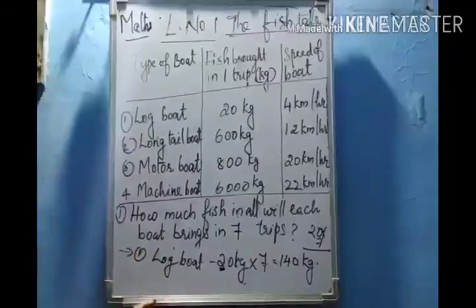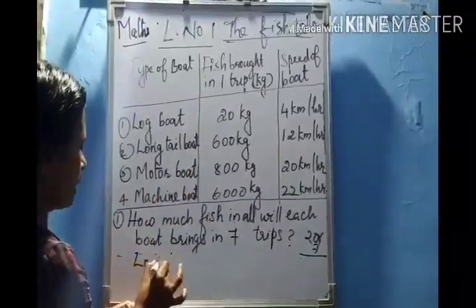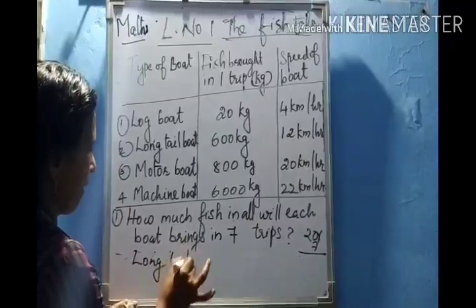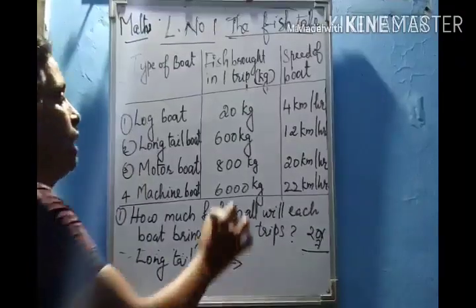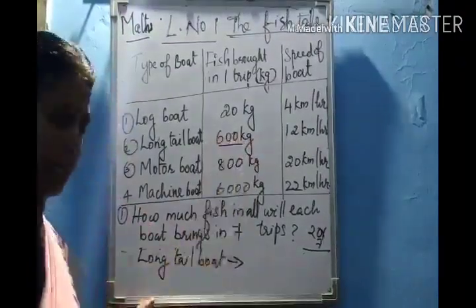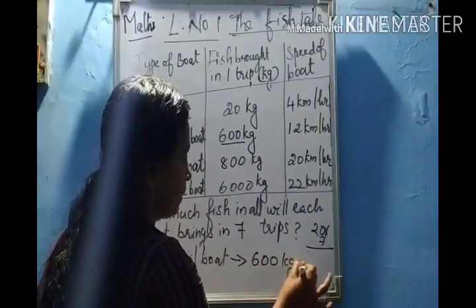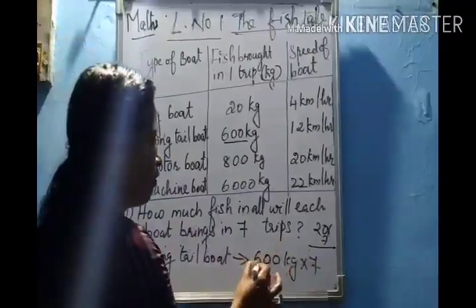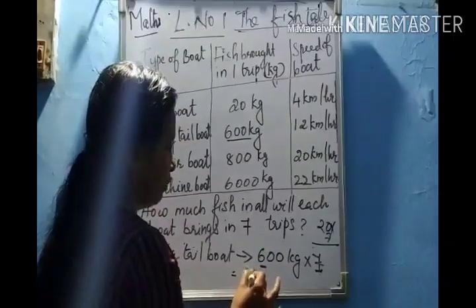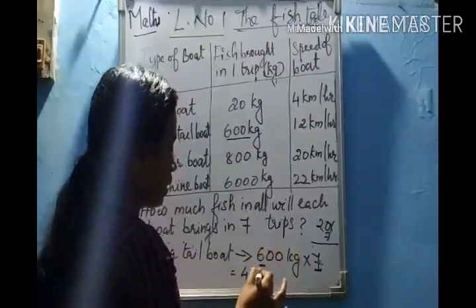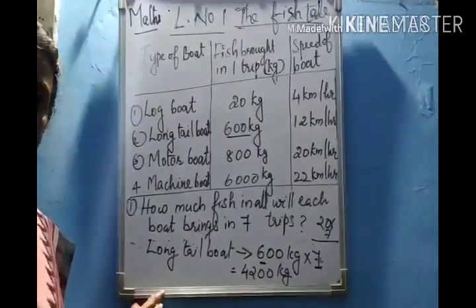Next is the long tail boat. How much fish does it bring in one trip? It brings six hundred kilograms of fish in one trip. So in seven trips: six hundred multiplied by seven. Six sevens are forty-two, and we also add the two zeroes. So four thousand two hundred kilograms of fish will be brought in seven trips.